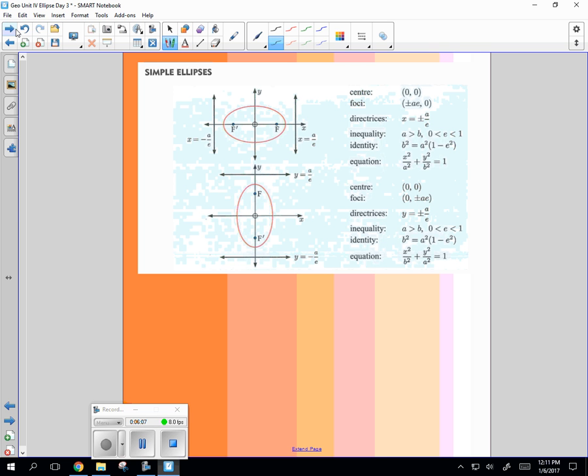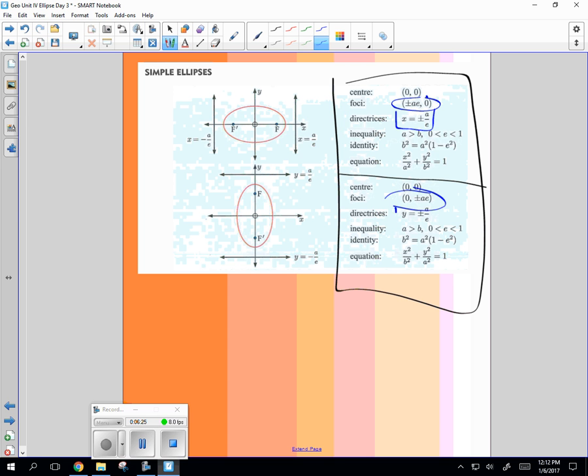And then all of those together are in this little grid here to show you if you have focal points on the x-axis. There you go. Focal points on the y-axis. There you go. And of course, your directrix will follow wherever your focal points are.